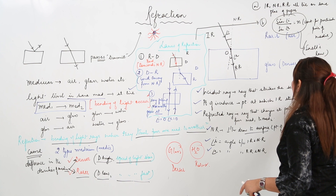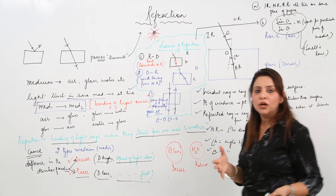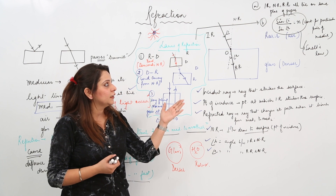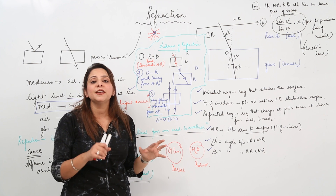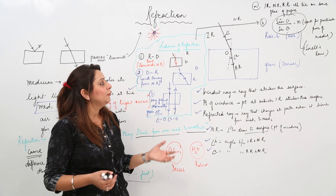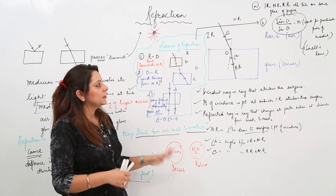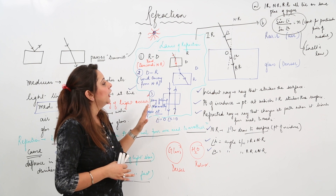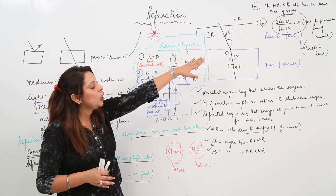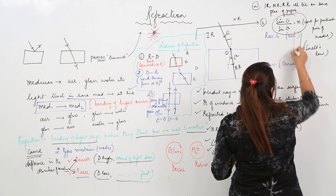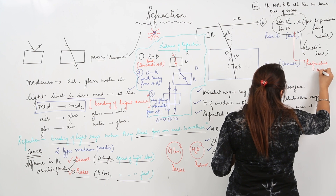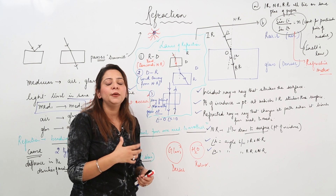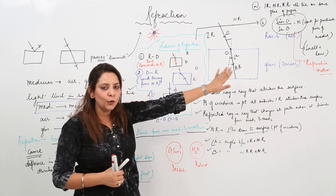Snell's law may seem confusing if you haven't studied sine, cos, and tan yet — you will cover those in maths in 10th standard. For now, just know that this constant ratio is related to what we call the refractive index. We won't use sine i or sine r here; instead we will compare the speed of light in different media, and that is what we call the refractive index.